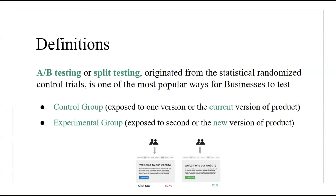What makes this testing great is that businesses get direct feedback from actual users by presenting them with the existing versus the varied product version. In this way they can quickly test new ideas, and if the A/B test shows the varied version is not effective, businesses can still learn from this and decide whether to improve it or look for other ideas.